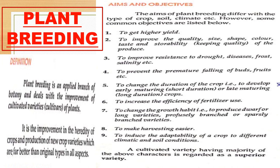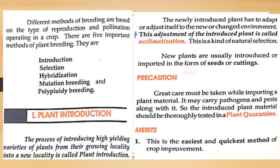Other objectives include: to change the duration of crop — that is, to develop early maturing (short duration) or late maturing (long duration) crops; to increase efficiency of fertilizer use; to change growth habit, producing dwarf or long varieties, profusely branched or sparsely branched varieties; to make harvesting easier; and to induce adaptability of crops to different climate and soil conditions. Different methods of plant breeding are based on the type of reproduction and pollination. There are five important methods: introduction, selection, hybridization, mutation breeding, and polyploidy breeding.